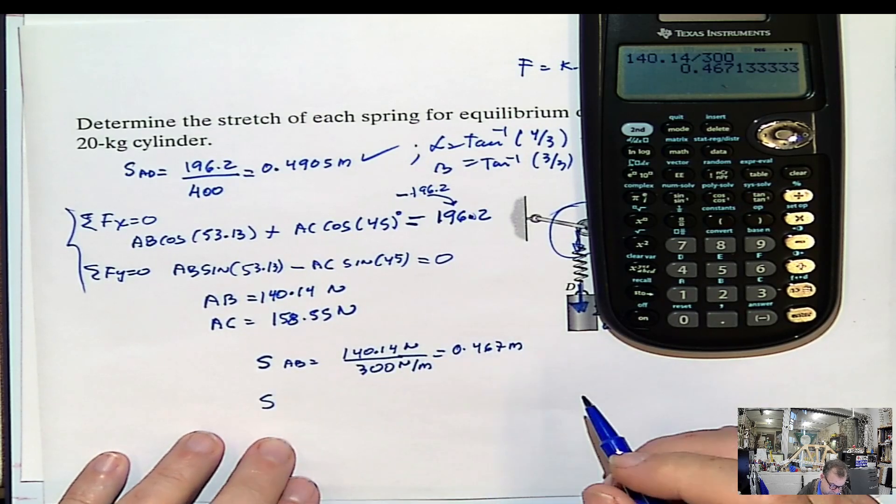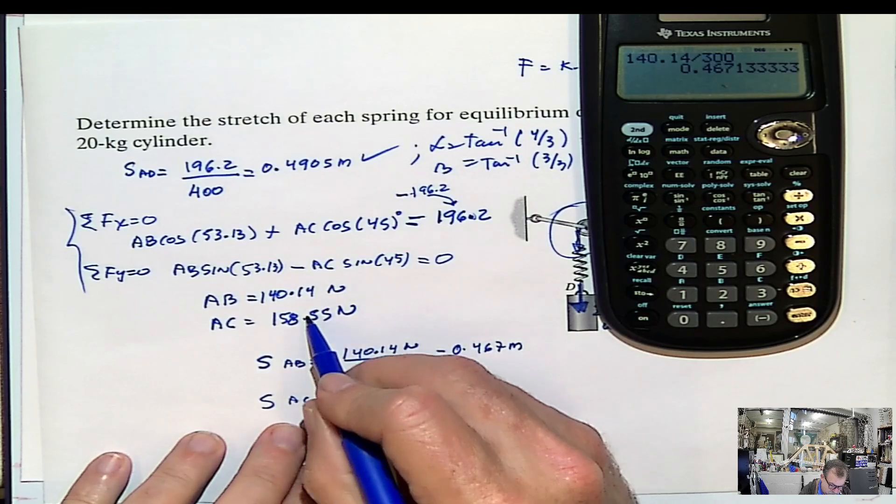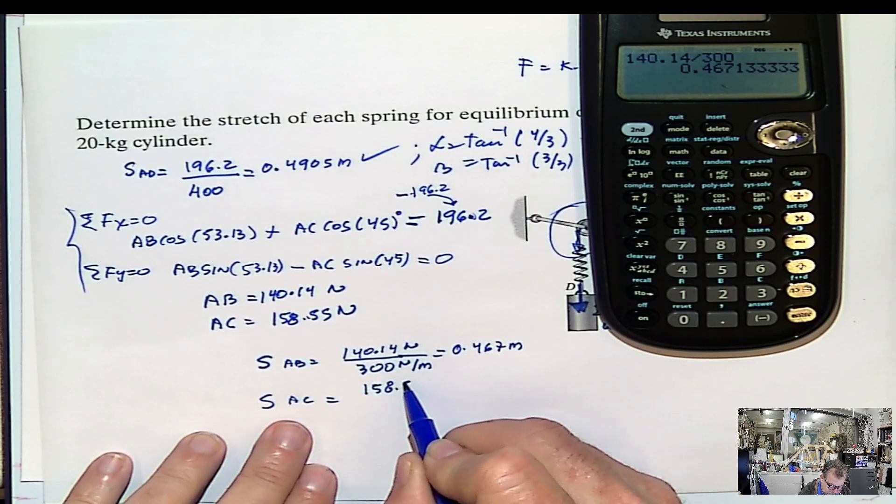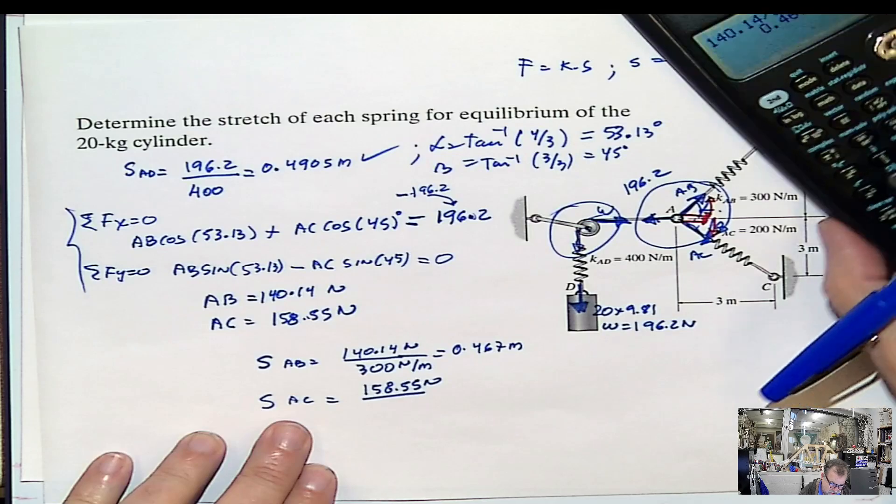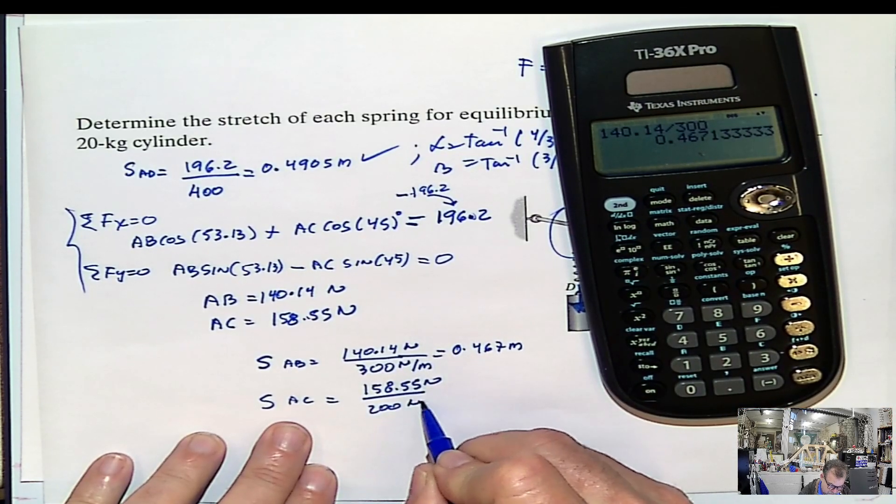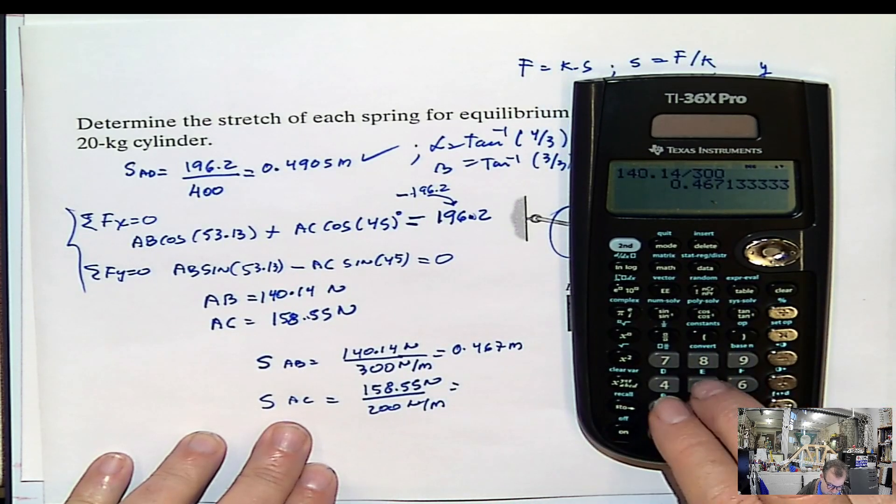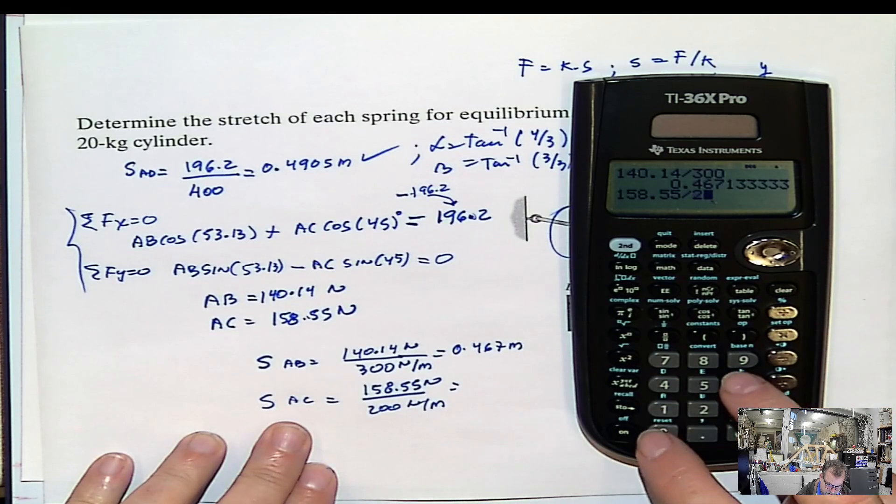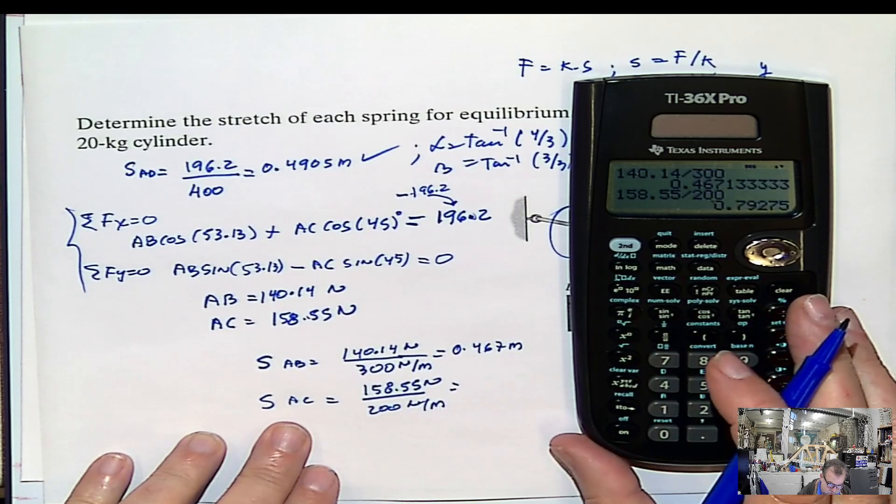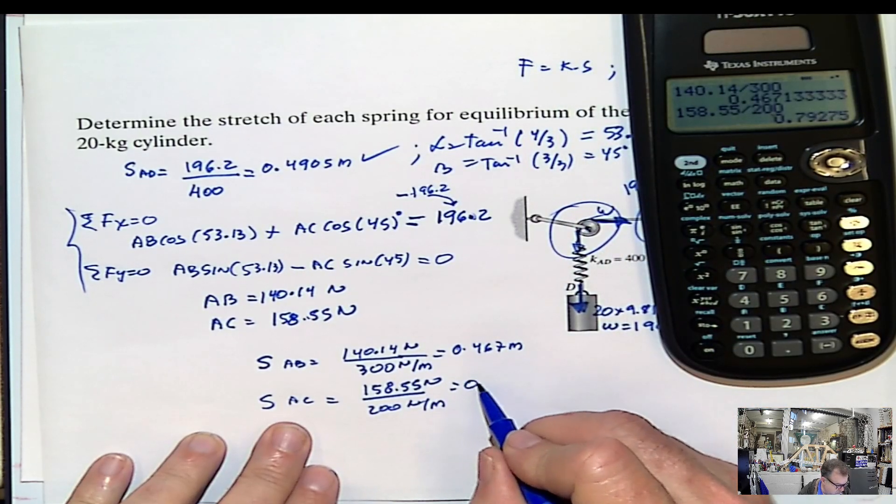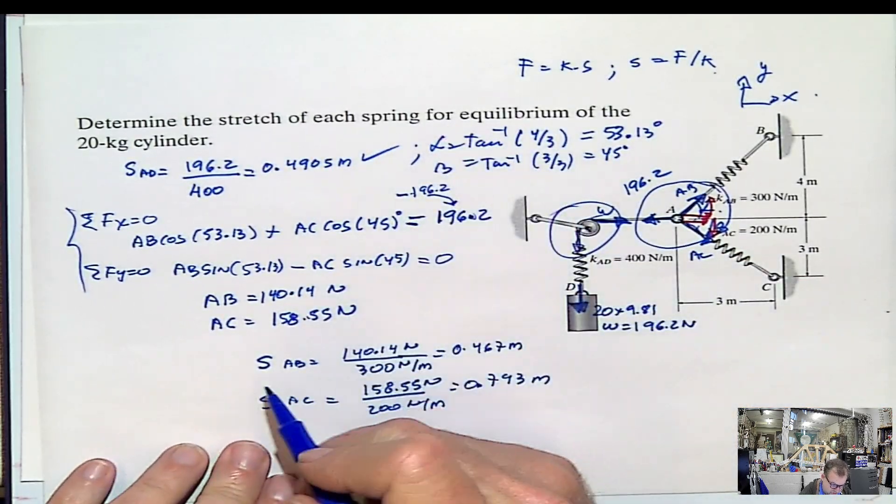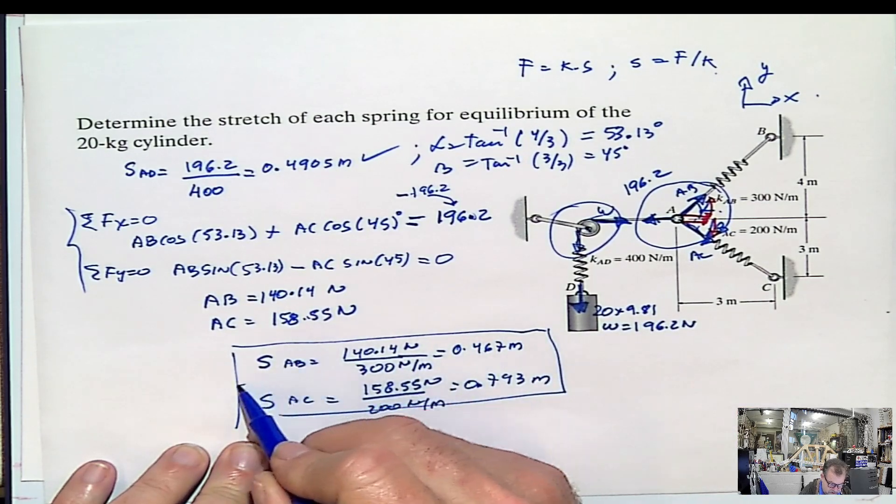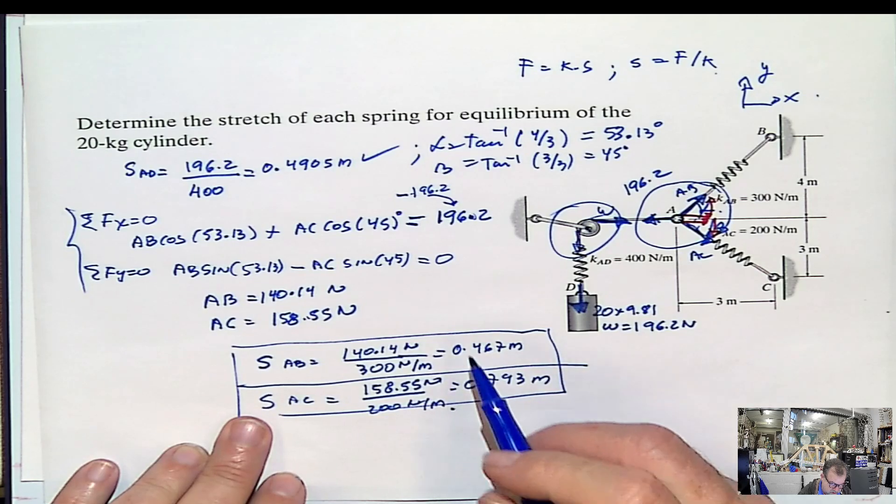And the stretching of the spring AC will be the force in AC. It would be the force in AC, 200, and that will be 158.55 divided by 200, 0.793 meters. The answer, the stretch of each spring, the stretch of AB, the stretch of AC, and the stretch of AD.